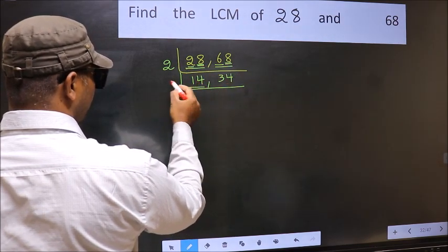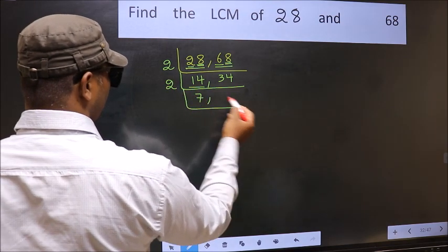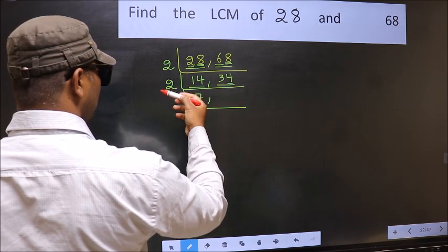Now here we have 14. 14 is 2 times 7 is 14. The other number 34, last digit 4, even, so this is divisible by 2.